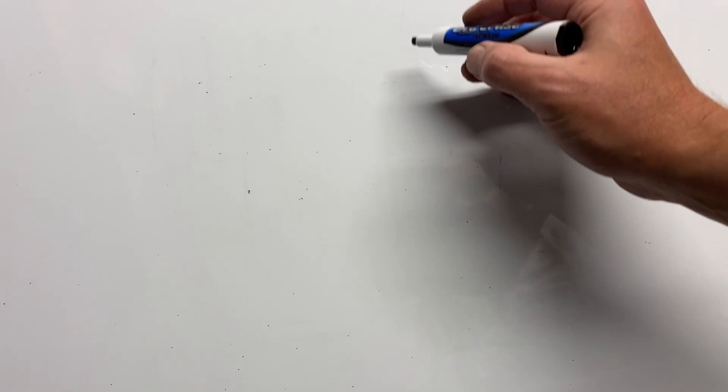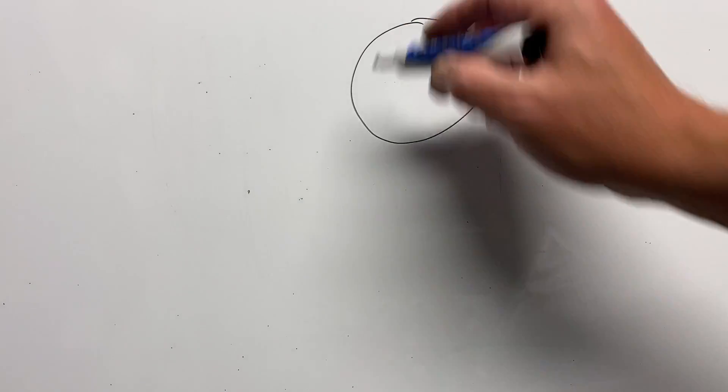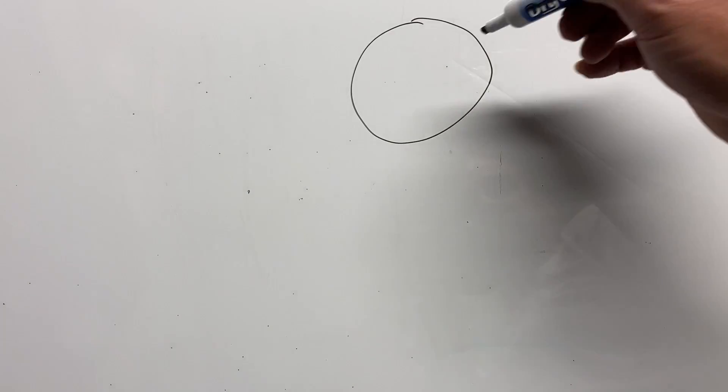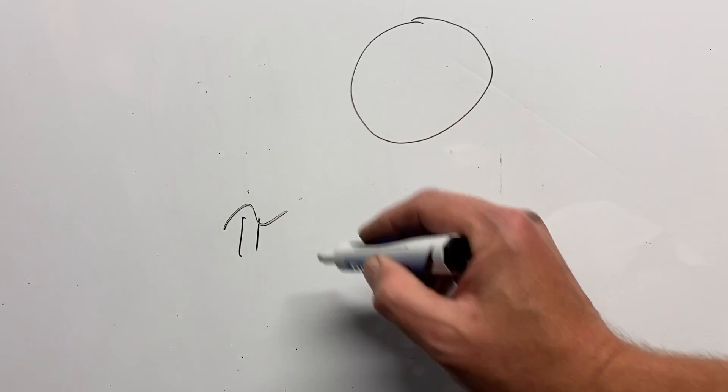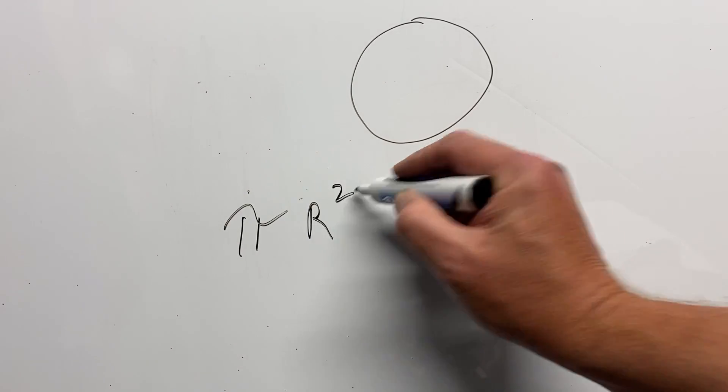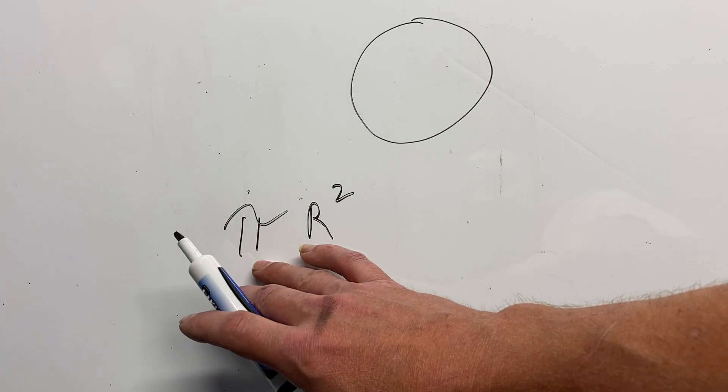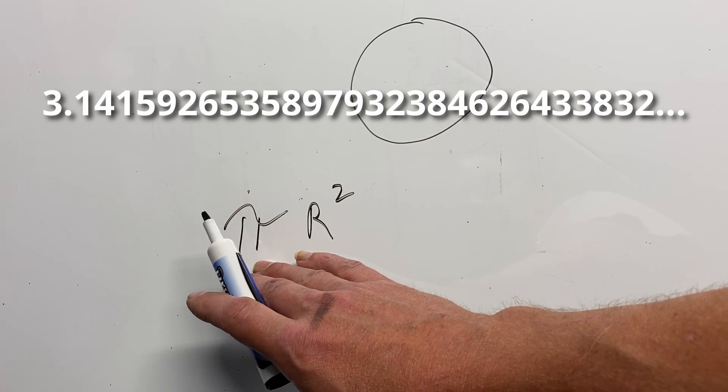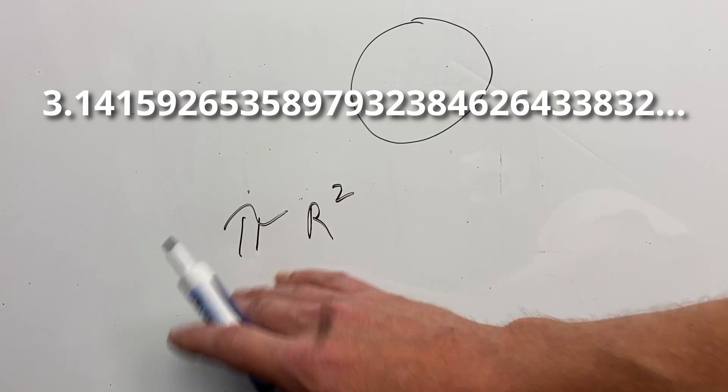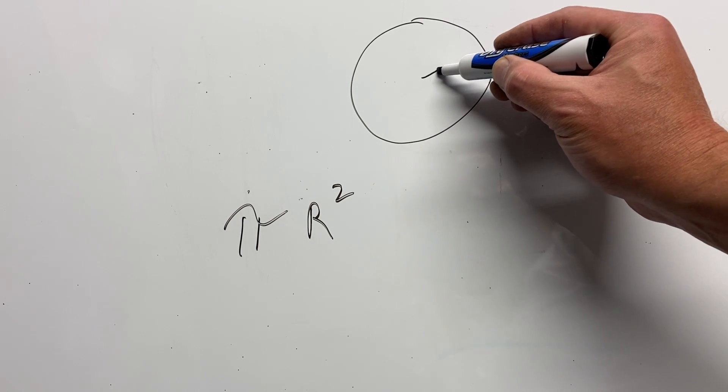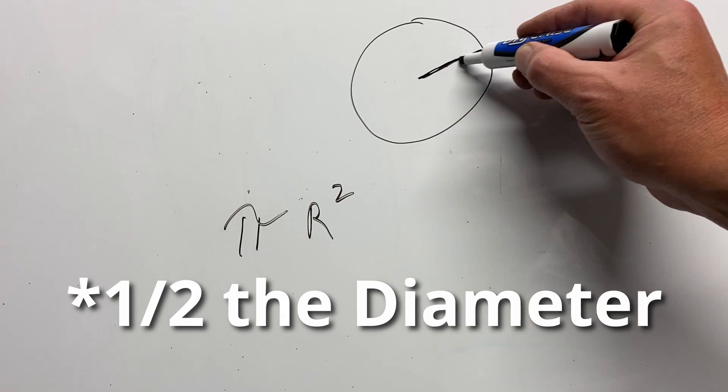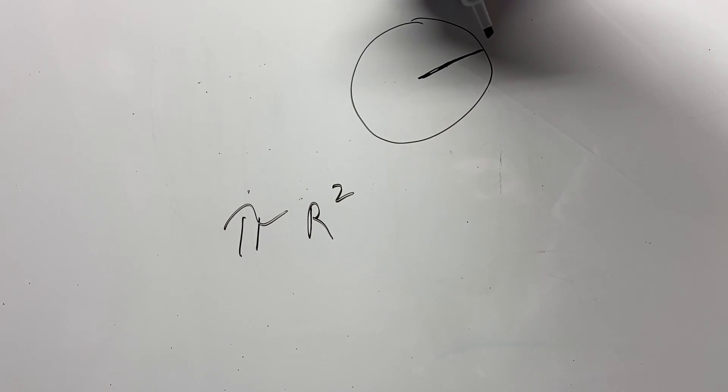So the first thing we have to know is the area of a circle. So here's our circle. And to determine the area of the circle, we have pi r squared, pi being the mathematical constant used when doing math about circles, and r meaning the radius. So r is half the distance from the center of the circle to the outside, and it has to be squared.